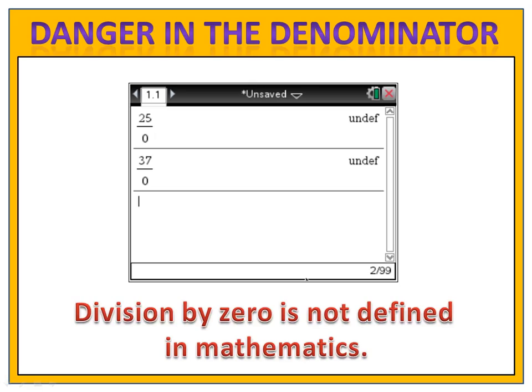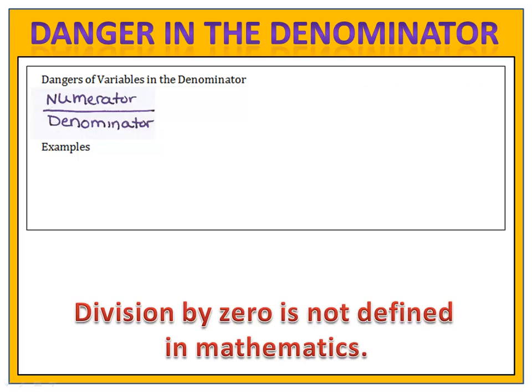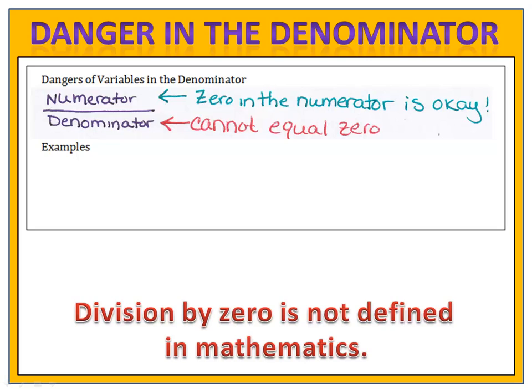Remember, the one thing we can never do in mathematics is divide by zero. Division by zero is undefined, and you can see that by typing any number in your calculator and dividing it by zero — it'll come back with some kind of an error. When we have a fraction, the denominator can never equal zero. It's okay for the numerator to be zero, but the denominator cannot.